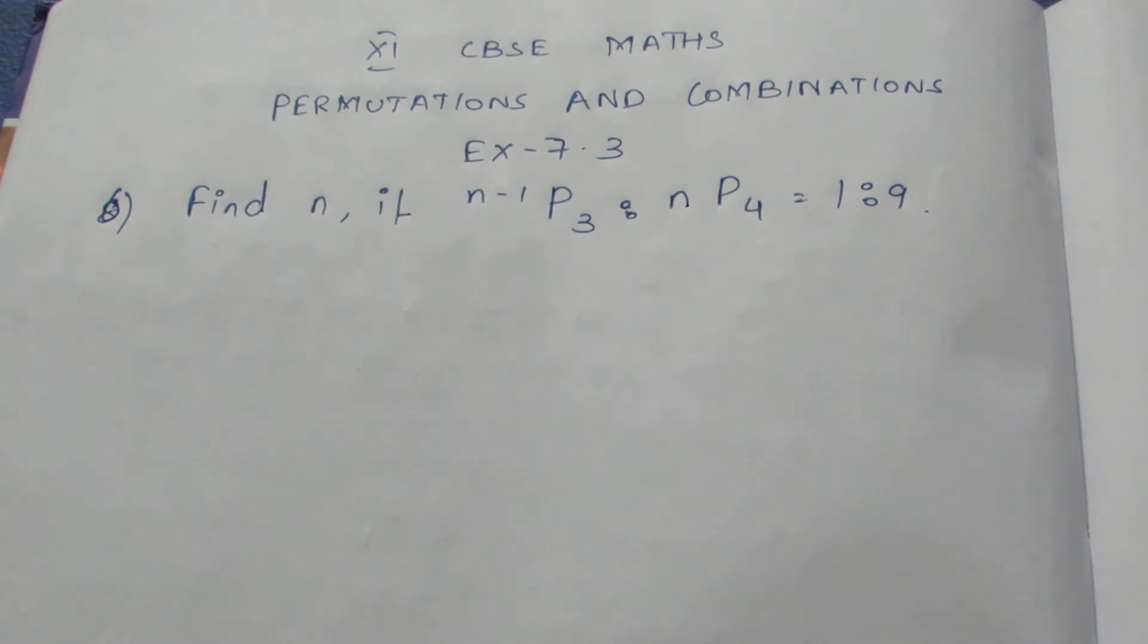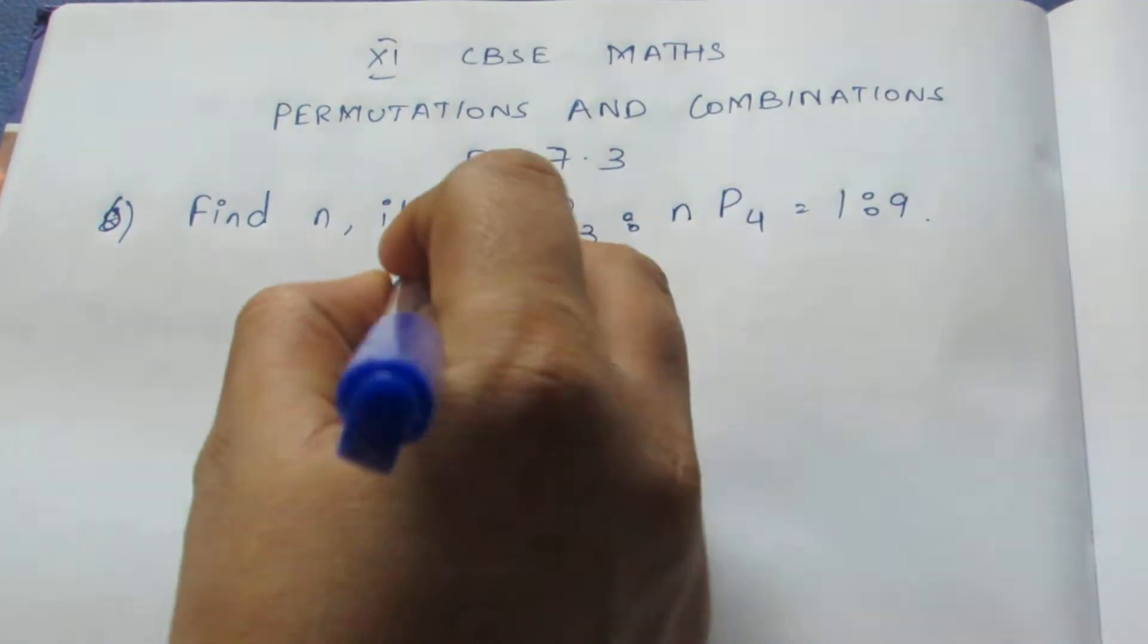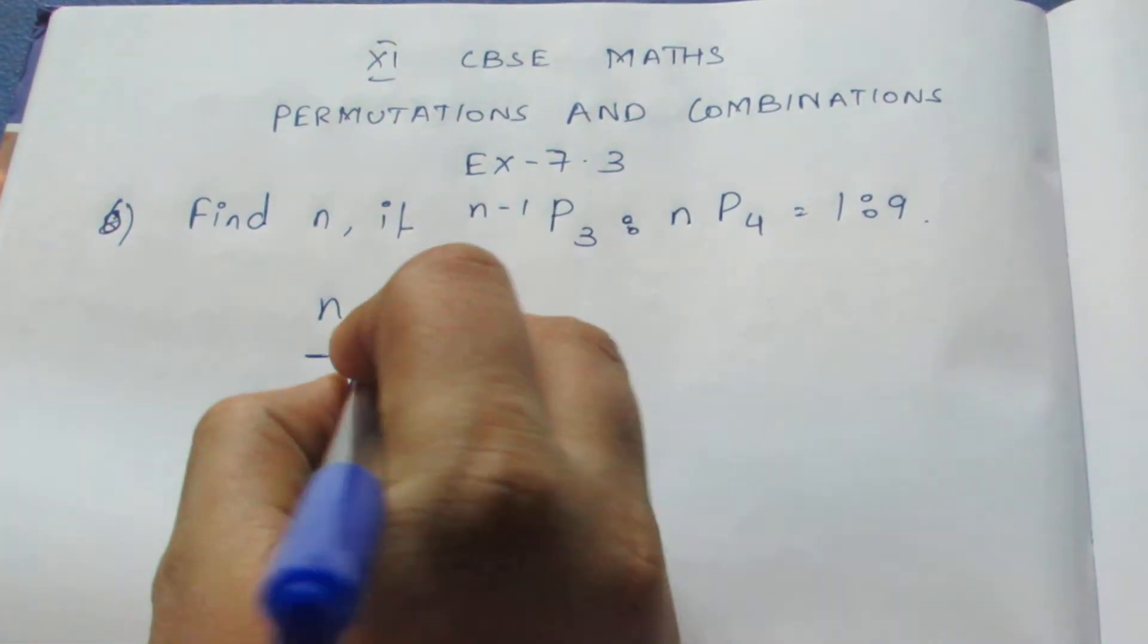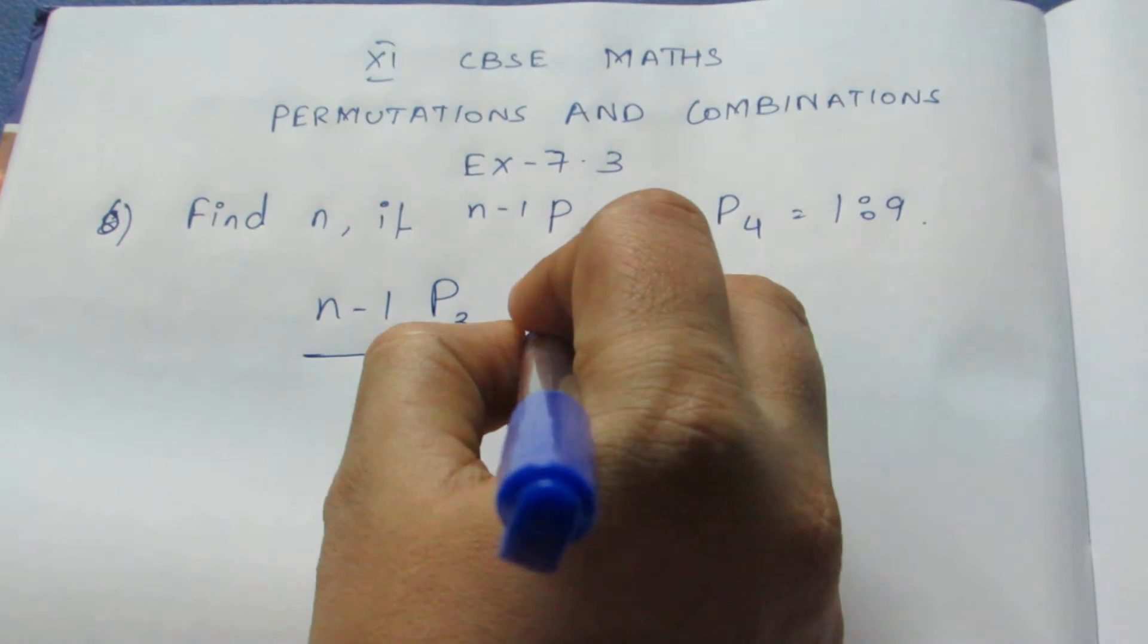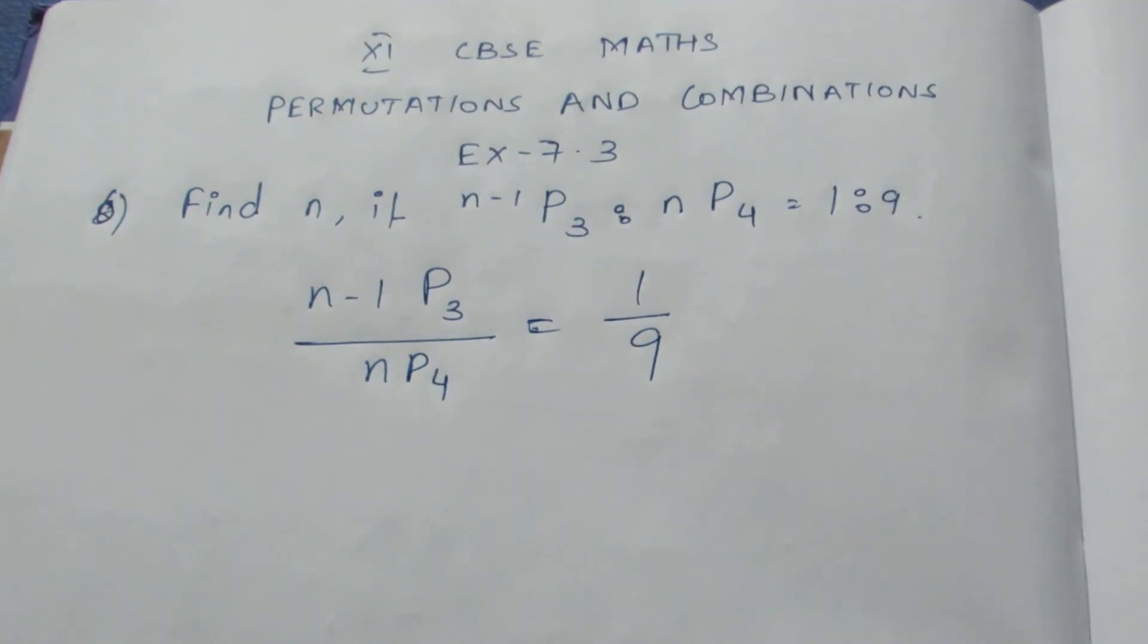They have given a ratio: N minus 1 P3 is to N P4 equals 1 is to 9. Let me write both ratios. We can write it as a fraction: N minus 1 P3 divided by N P4 equals 1 divided by 9.